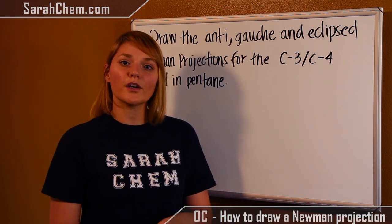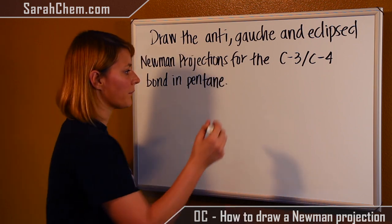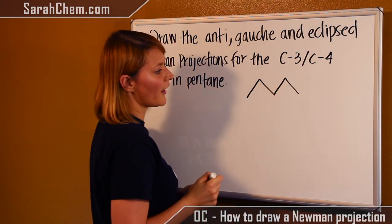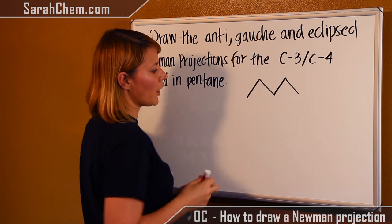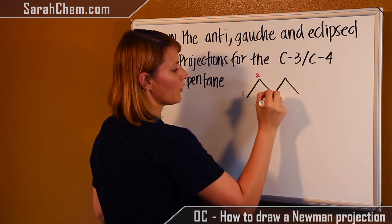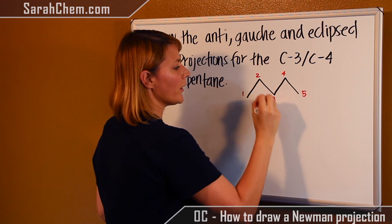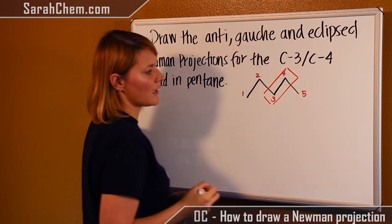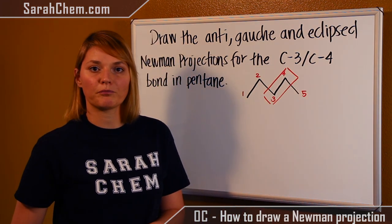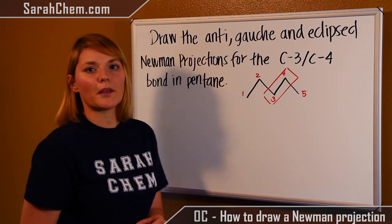The first thing we want to do is draw the line structure for pentane, which is an alkane with 5 carbons. I'm going to label our carbons 1, 2, 3, 4, and 5. We are focusing on the C3-C4 section, so that's where all the pertinent information will come from. The first one we're going to draw is the anti-conformation.